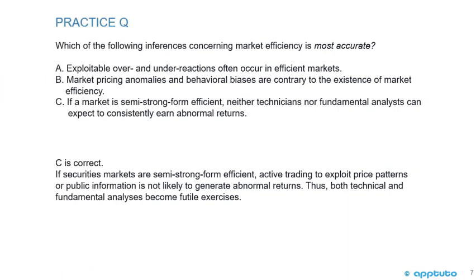This question includes information about market anomalies and behavioral biases, which we'll see in the next couple of LOSs. Nevertheless, the inference concerning market efficiency that is most accurate is C: if a market is semi-strong form efficient, neither technicians nor fundamental analysts can expect to consistently earn abnormal returns. If security markets are semi-strong form efficient, active trading to exploit price patterns or public information is not likely to generate abnormal returns. Thus, both technical and fundamental analysis become futile exercises.